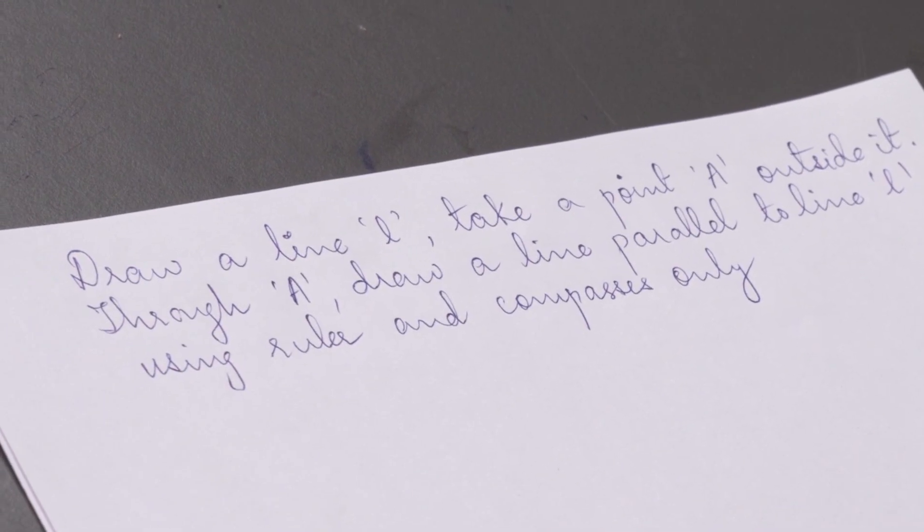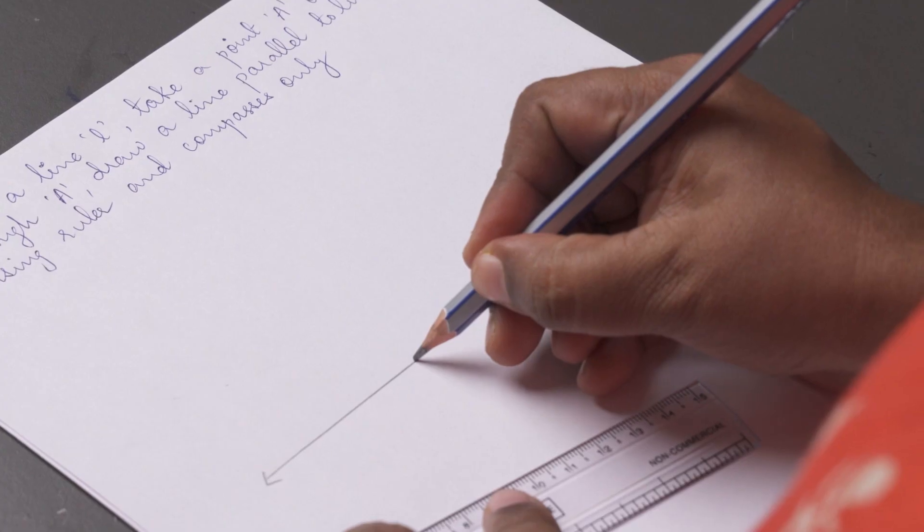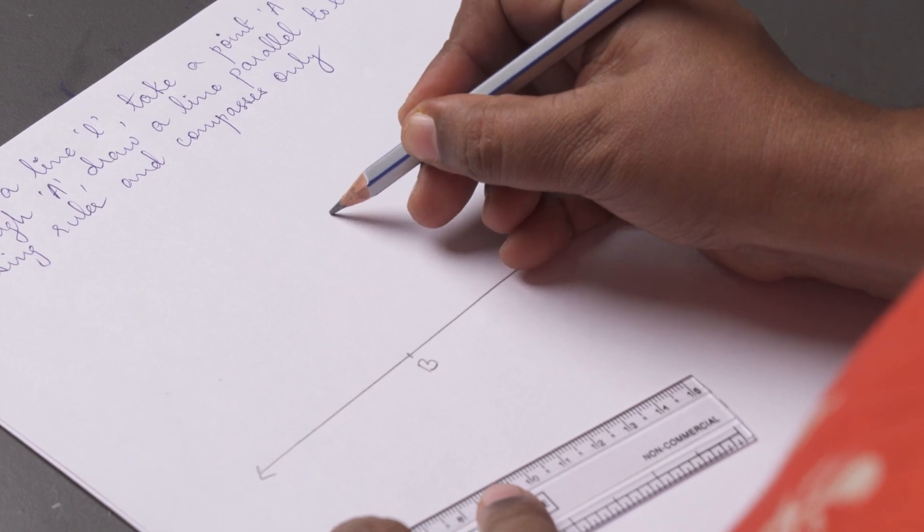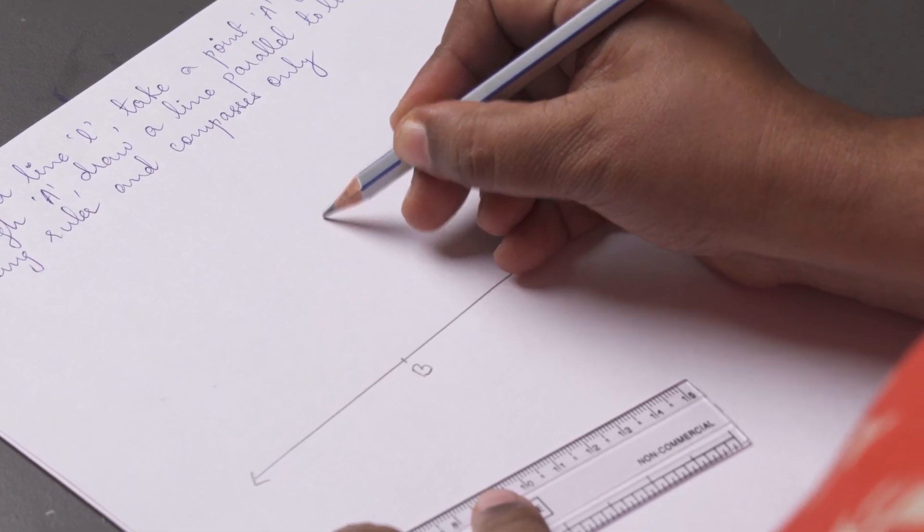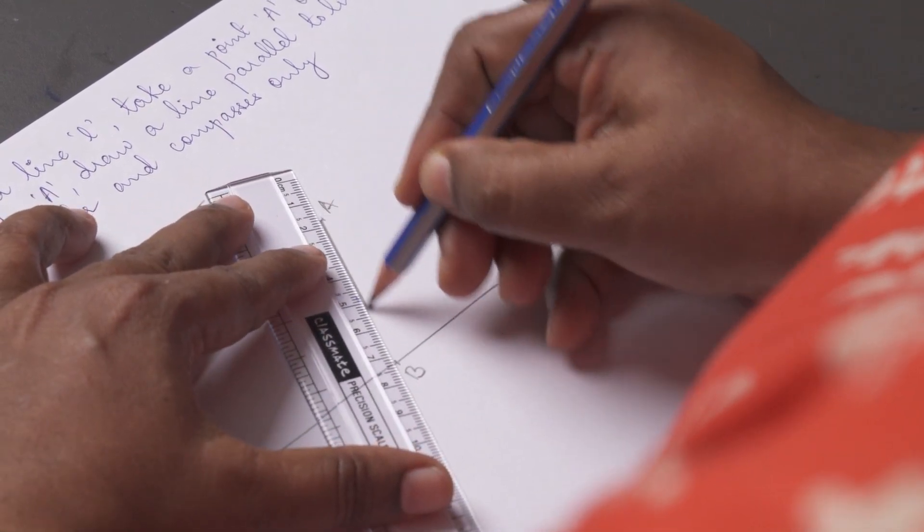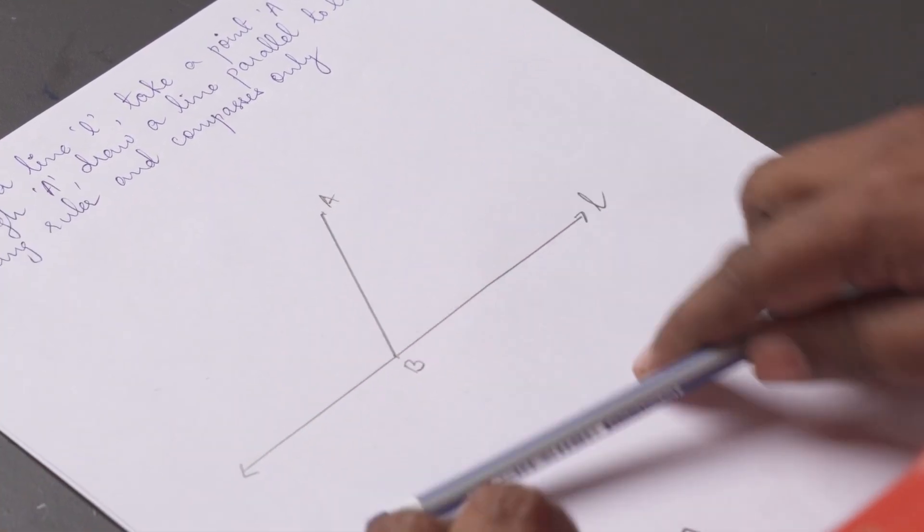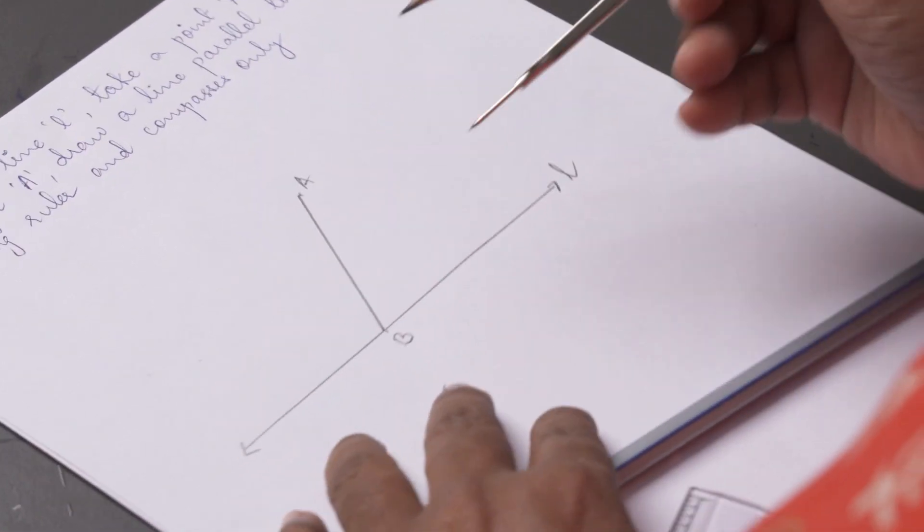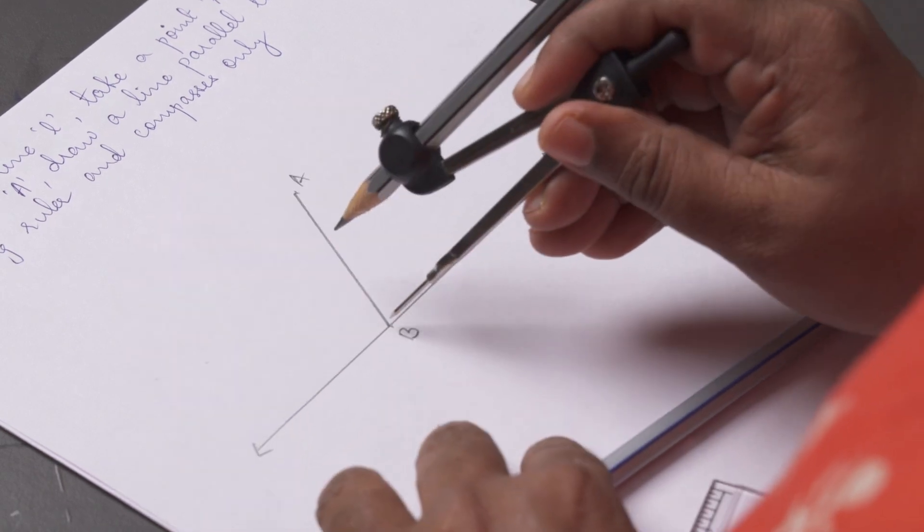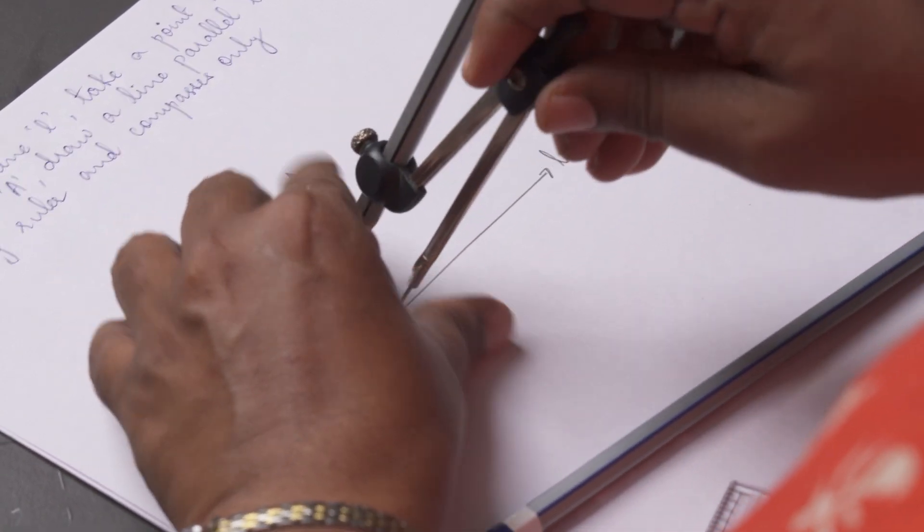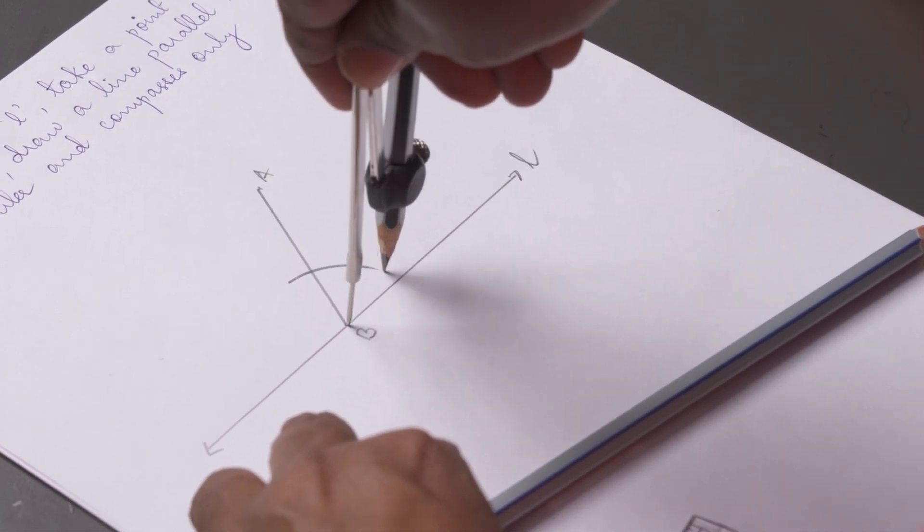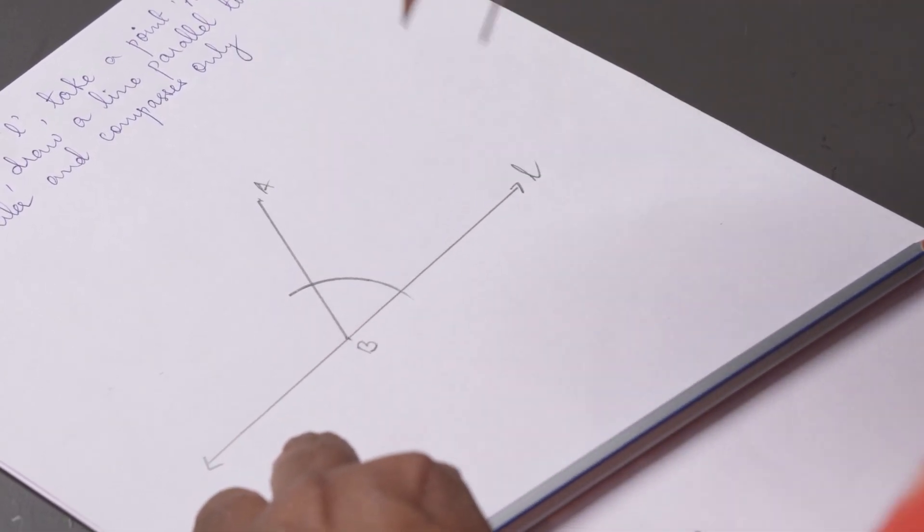First, draw line L, and take any point B on it. Now, take a point A outside line L, and join A to B. Take a pair of compasses, and any radius, place it on B. Draw an arc, cutting AB at D, and line L at C.